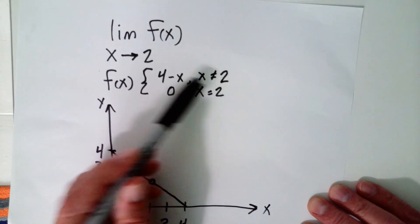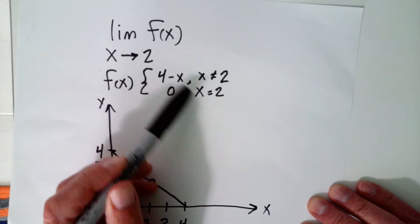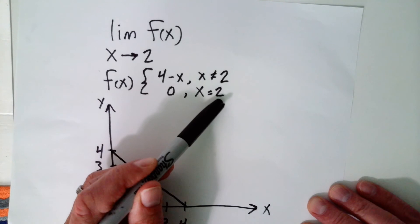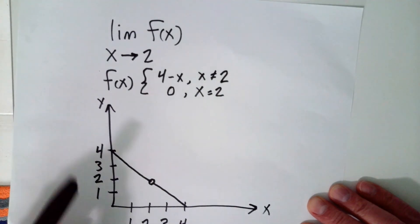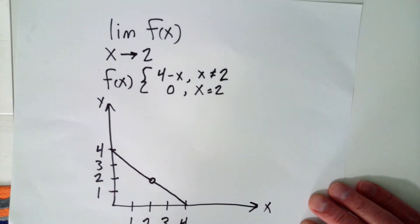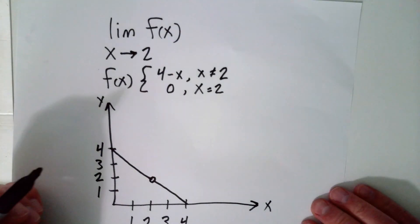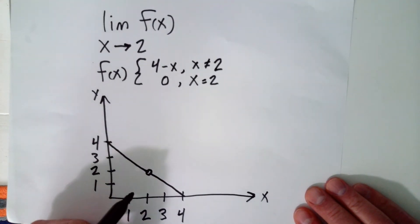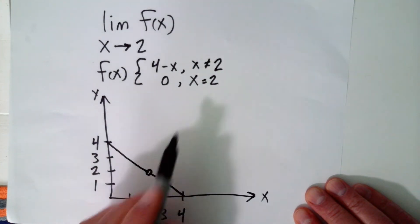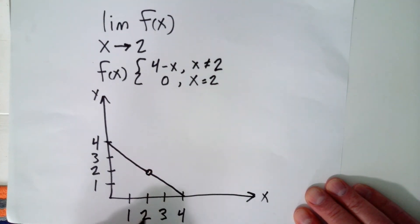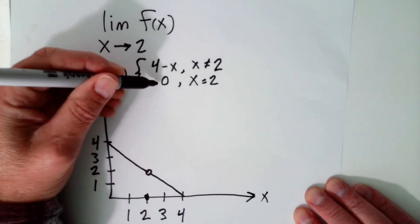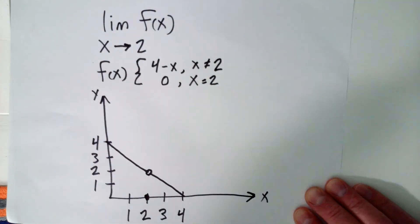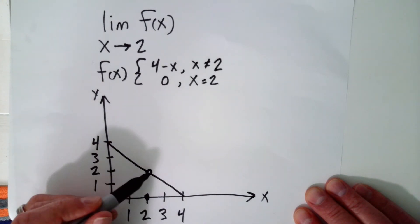You can just define a function any way you want, and this one's a little bit wacky. It says for everything that's not 2, the function is 4 minus x. But if x is 2, then the value of the function is 0. So this is what that graph would look like — it's the same as the graph of 4 minus x, except at x equals 2. At x equals 2, the value of the function is 0, so there's a hole right there.